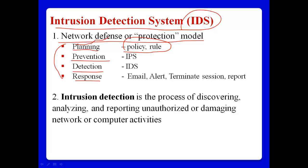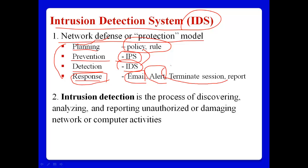Normally, planning can be implemented by policy, security policy, or security rules. Prevention is handled by IPS. Detection by IDS. And if we detect some network attack, we need adequate responses such as email notification, alerts, terminating sessions, and reports.